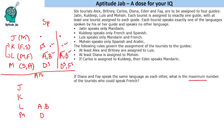Now consider the case where Diana and Faye both speak Arabic. Then Faye is assigned to Mohsen, since only Mohsen speaks Arabic. We then have two more people to assign. To maximize French speakers: A can speak French, B can speak French, and whoever is assigned to Kuldeep can speak French — giving a maximum of three people speaking French in this case as well.